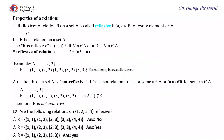Now coming to the properties of relations. The first property is a reflexive relation. A relation R on set A is called reflexive if (a,a) ∈ R for every element a ∈ A. In the matrix representation, all the diagonal elements must be 1. The matrix size will be N×N. The number of reflexive relations is equal to 2 to the power of N² minus N.